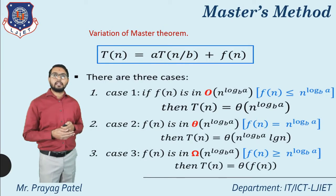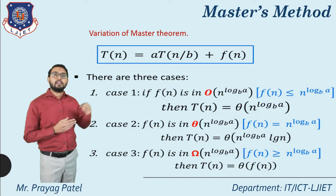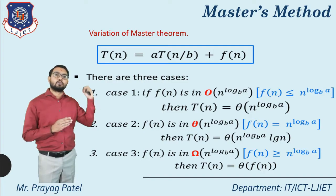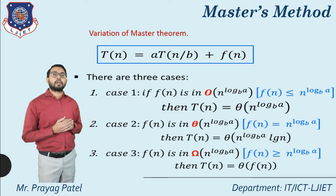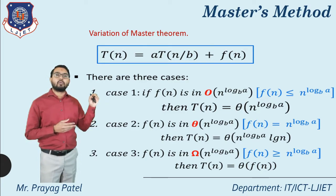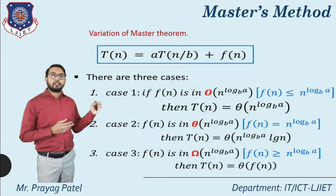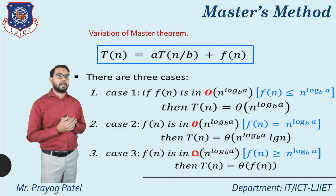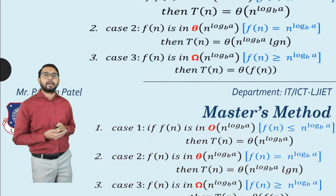The three case equations are: Case 1: if f(n) ≤ n^(log a base b), then T(n) = Θ(n^(log a base b)). Case 2: if f(n) = n^(log a base b), then T(n) = Θ(n^(log a base b) · log n). Case 3: if f(n) ≥ n^(log a base b), then T(n) = Θ(f(n)). Our aim is to find the value of T(n).